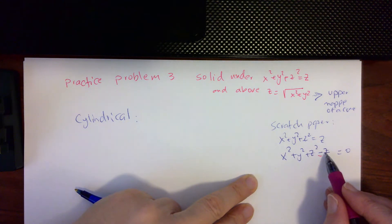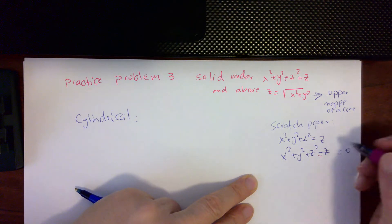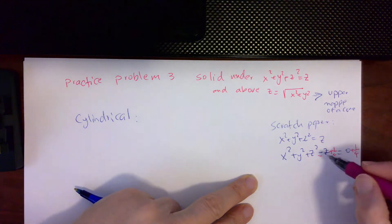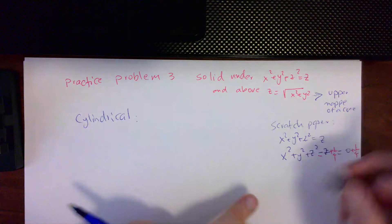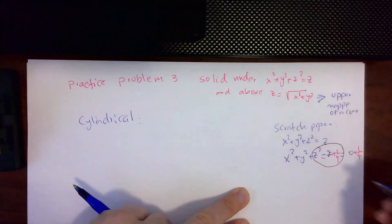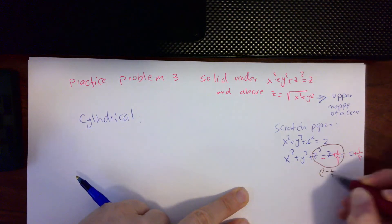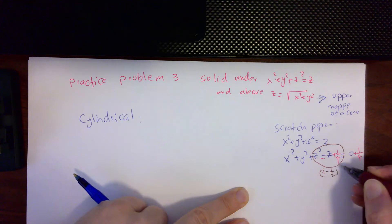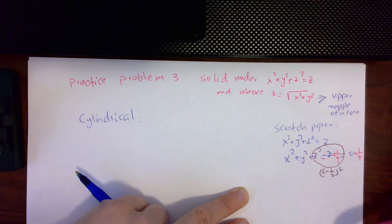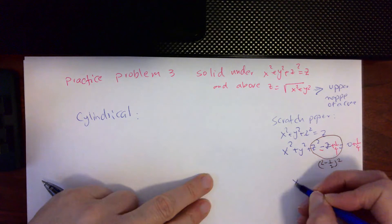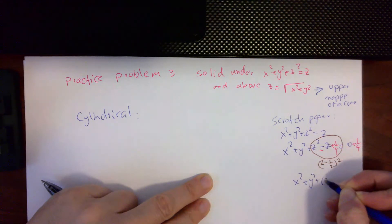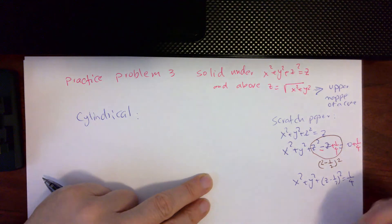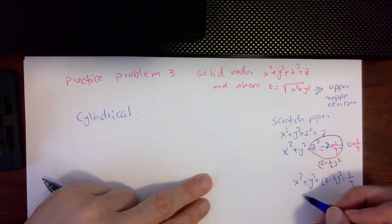I add and subtract one fourth. The entire expression becomes (z minus one half) squared, since negative one half is half the coefficient of z. What I get is x² + y² + (z - 1/2)² = 1/4. Now that I have this, it looks like a sphere.